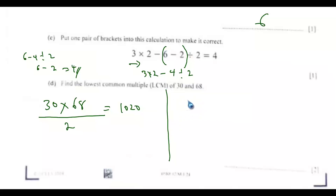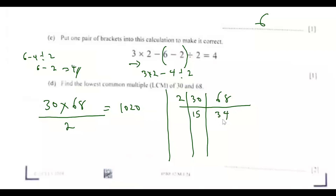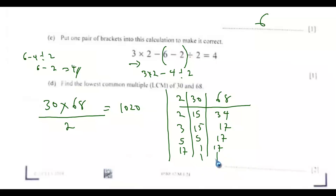Alternatively, you can use downward division. Write 30 and 68, then divide by 2: you get 15 and 34. 2 goes into 34 giving 17, but cannot divide 15 evenly so drop it. Then 3 goes into 15 giving 5, drop 17. Then 5 goes into 5 giving 1, drop 17. Finally 17 is left. The LCM is 2 by 2 by 3 by 5 by 17, which gives 1020 — the same answer.